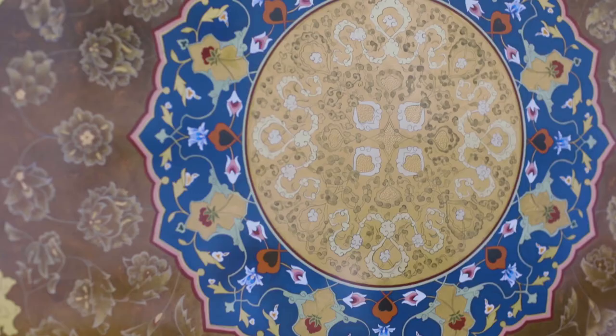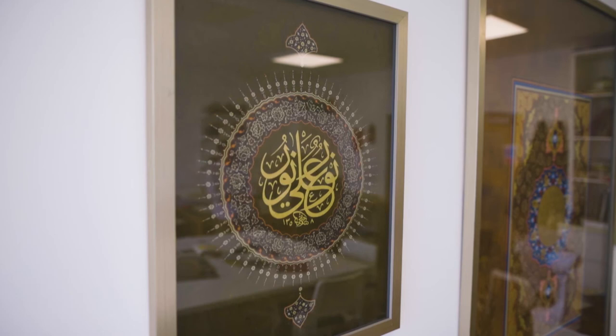And then you have hatai again, which is also the name of the flower as well as the name of the group. And that is a cross section of the flower. So within that you can actually see the pollen and the little leaves coming out.